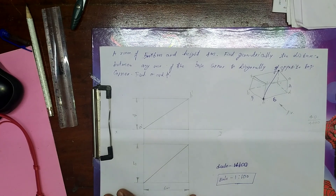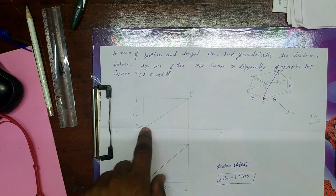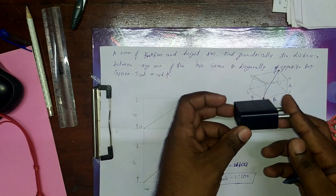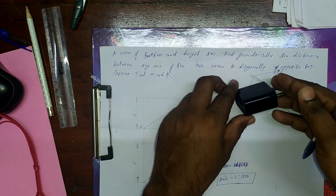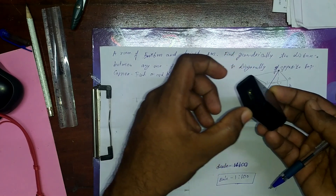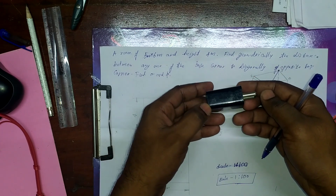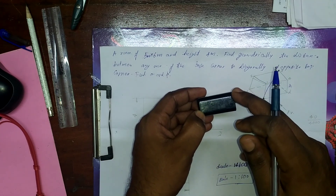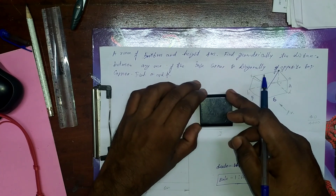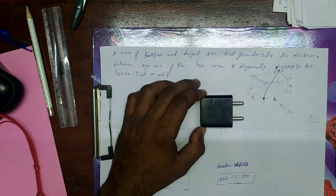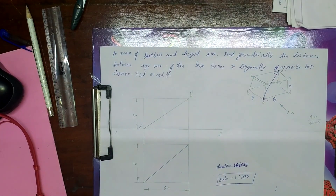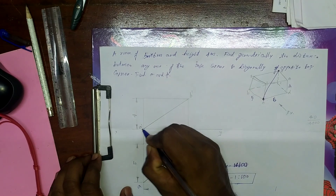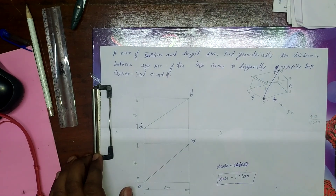We need to find out the true length. If we have a room, we identify the top corner. This is the room. We label the corners: this is A, this is B, and this is A dash, this is B dash. I am using a pen because in the last class the clarity was poor when I used a pencil.